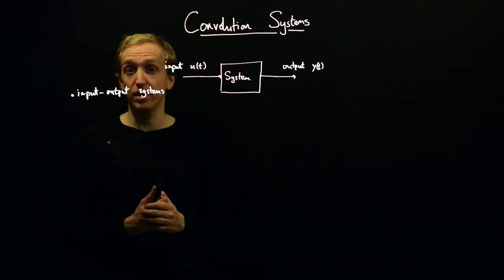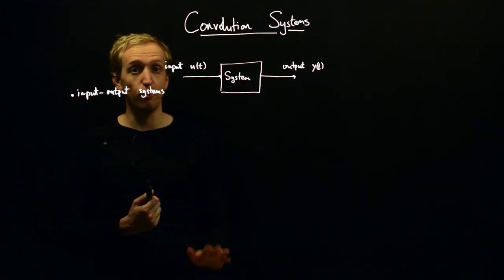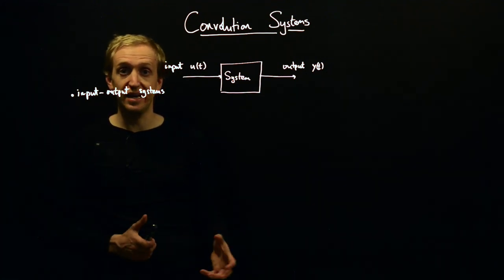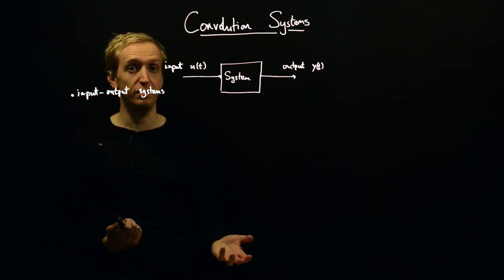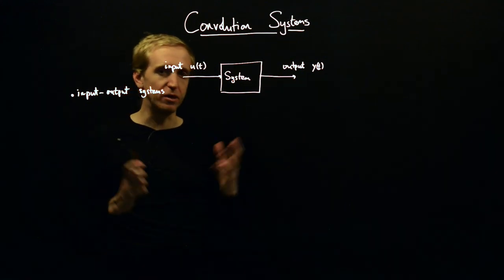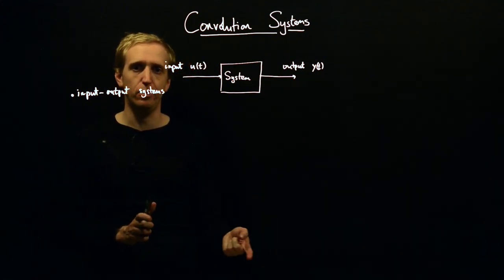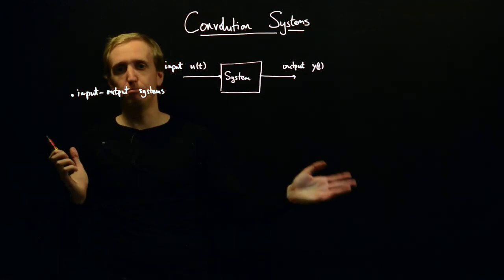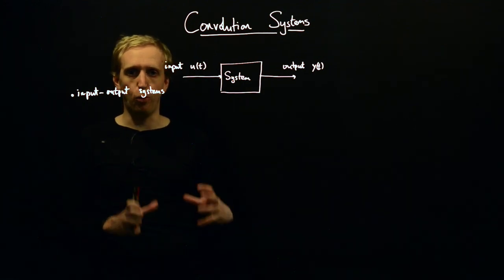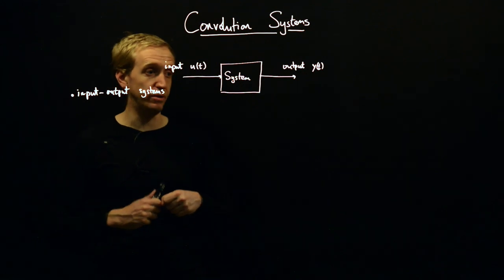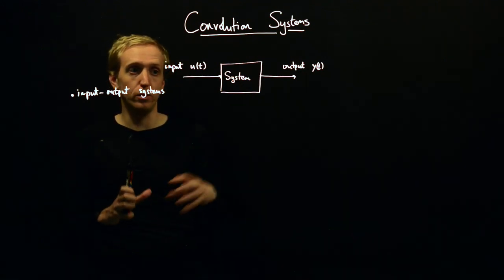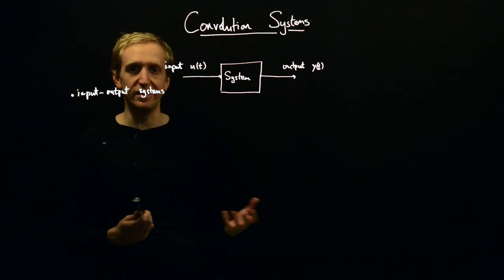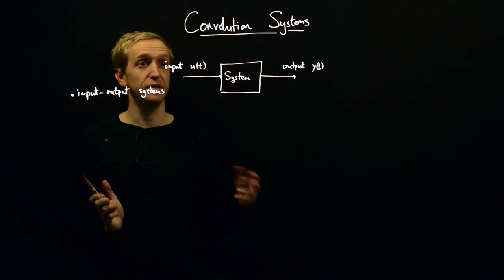Say we have a car and we want to understand how applying a force to the pedal affects the speed of the car. This would be the system we want to understand — the input would be the force applied to the pedal, the output would be the speed of the car. The control engineer would then want to understand that model and determine what force to apply to the pedal in order to get the velocity to be what they want. Input-output systems are the core objects for modelling dynamical systems. You can build complicated dynamical models out of simple models for individual components, feeding outputs of sub-components into the inputs of others.